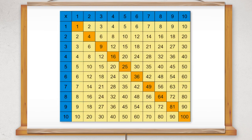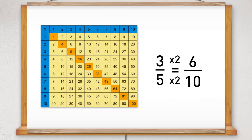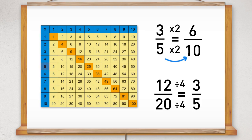A multiplication grid can be used to help find the missing numbers. Using the first example, where I want to find what I need to multiply five by to get ten, I look for five on the blue column, move along the row until I get to ten, then move up the yellow column until I get to the number two on the top blue row. So I need to multiply five by two to get ten. In the second example, I start at the five on the blue column, move along the yellow row until I get to the twenty, then move up the yellow column until I get to four. So I need to divide twenty by four to get five.